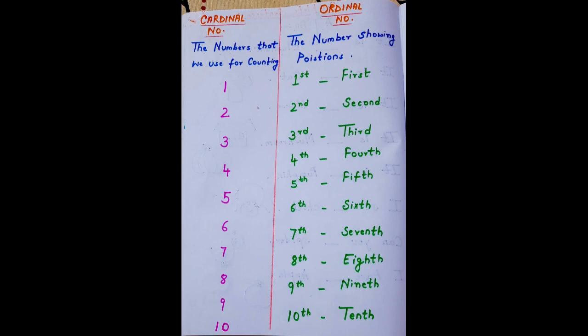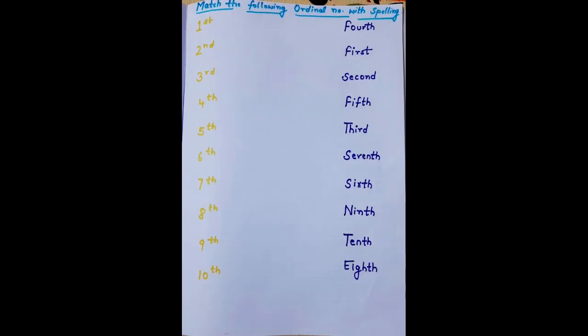If we talk about the cardinal number, cardinal numbers are the numbers we use for counting, like one, two, three, four, and so on. Now this is the first worksheet of the ordinal number to help kids understand ordinal numbers more clearly.